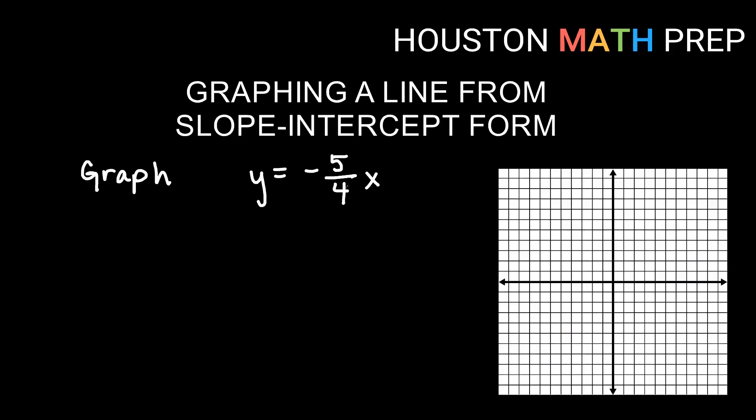Last one here. Similar, negative five-fourths x. Again, you want to think of plus zero. Sort of not written there, but that's really what is assumed there. There's no b written, so b is going to be zero in this case. So again, when we go to graph the y-intercept first, always y-intercept first, we'll graph that at y equals zero, which is at the origin.